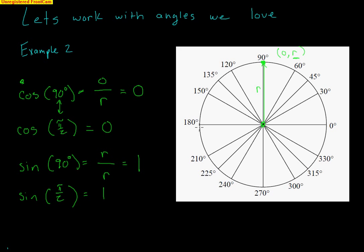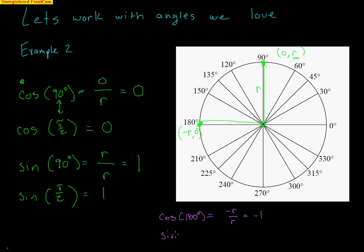Let's do 180 degrees. As a point, that would be (negative r, 0), because the radius is straight over in the negative direction and the vertical distance is 0. Cosine of 180 degrees is the x value, negative r, divided by the radius r — so negative 1. Sine of 180 degrees is the y value, 0, divided by the radius r — 0 divided by anything is 0. So cosine of 180° = −1 and sine of 180° = 0.